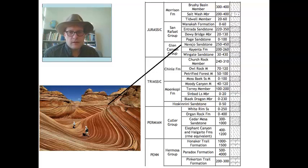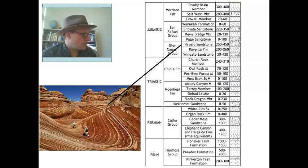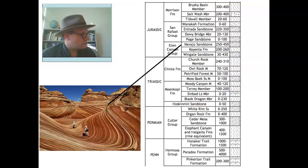On top of the Kayenta we have the very beautiful and characteristic Navajo Sandstone, also in the early Jurassic. The Navajo Sandstone is a wonderful quartz arenite — a sandstone just full of quartz — well-rounded, well-sorted, representing eolian-type facies. These are ancient sand dune deposits sitting on top of the sequence in the Jurassic.